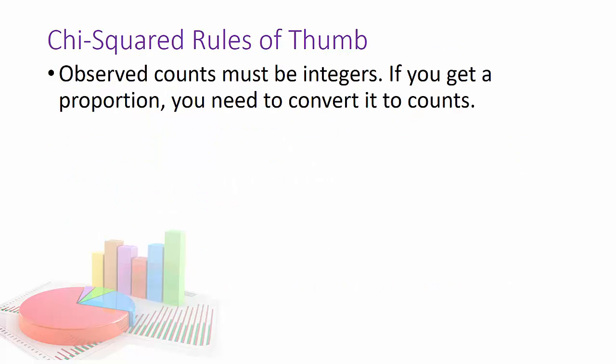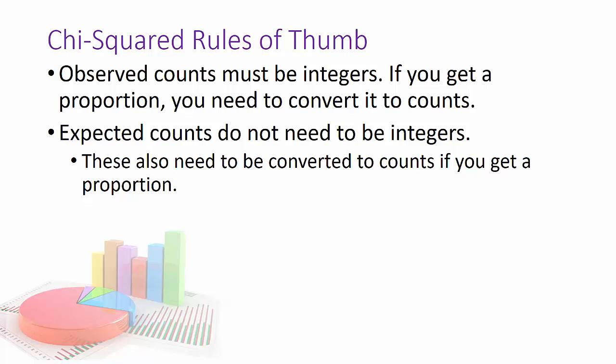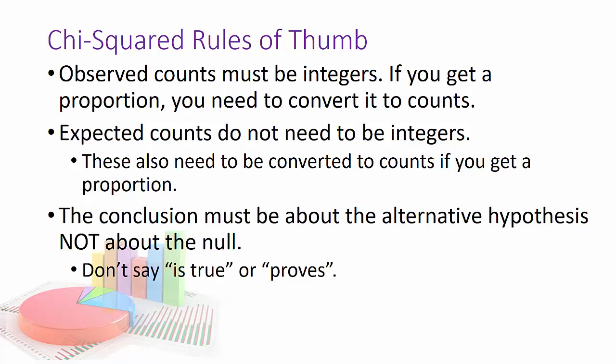Same rules of thumb: observed counts are integers, expected counts do not need to be integers. And remember, your conclusion must be about the alternative hypothesis, not the null, and never say the null is true or proves or anything is true or proves.